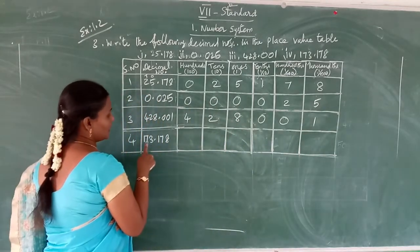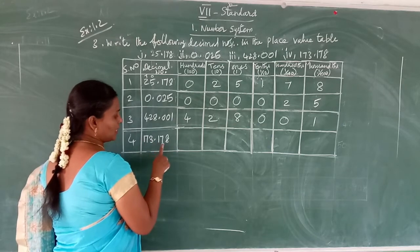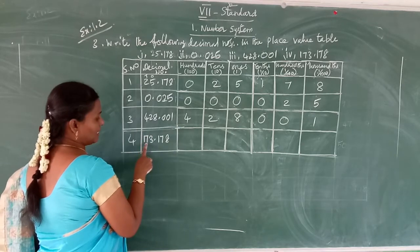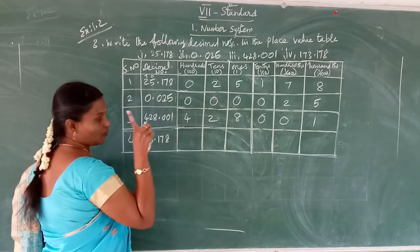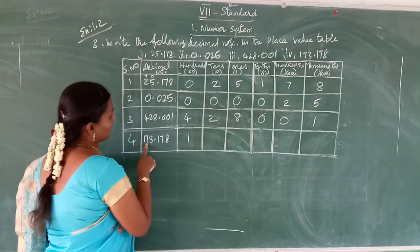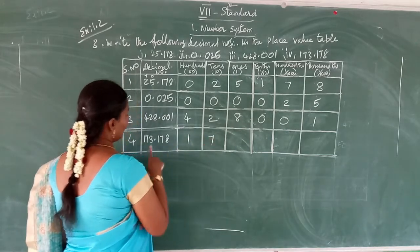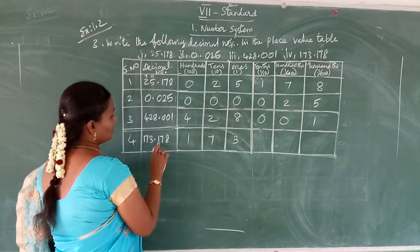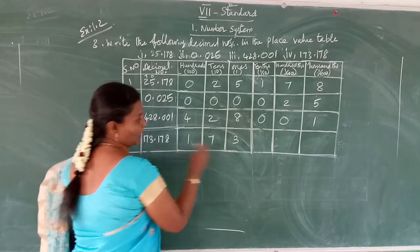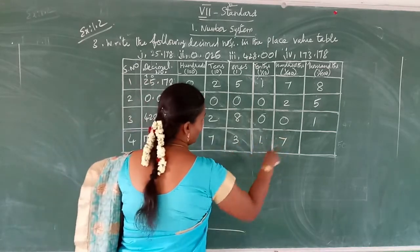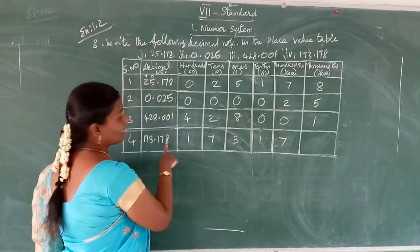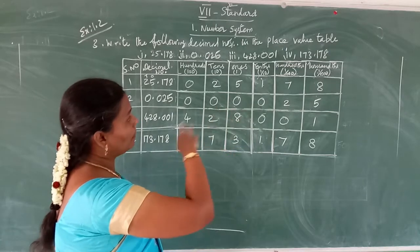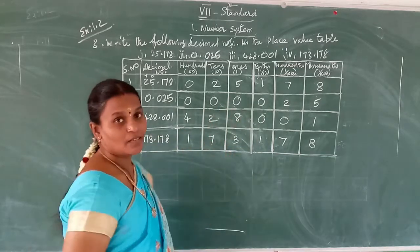See the fourth one: 173.178. The whole part is 173, so hundreds space is one, tens space is seven, ones space is three. Now the decimal part: tenths space is one, hundredths space is seven, thousandths space is eight.